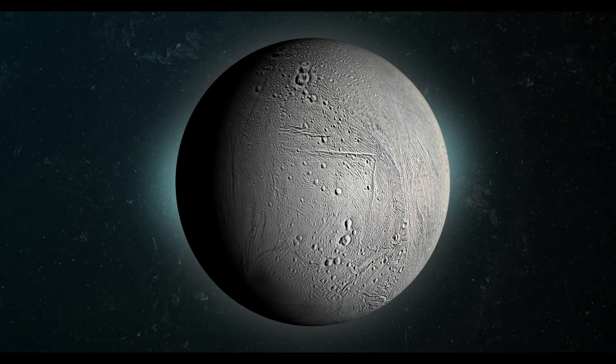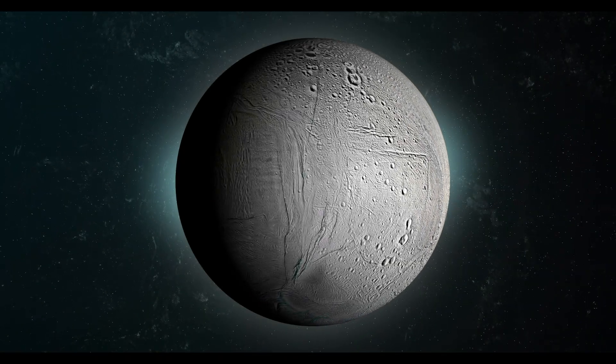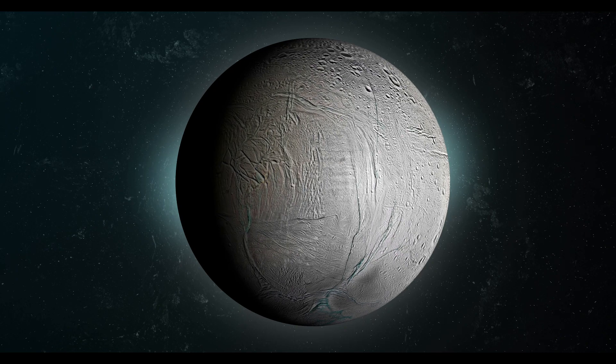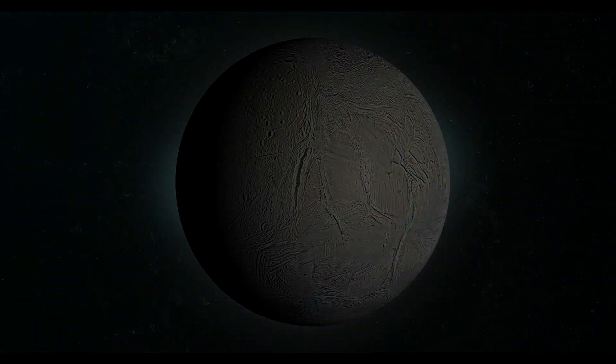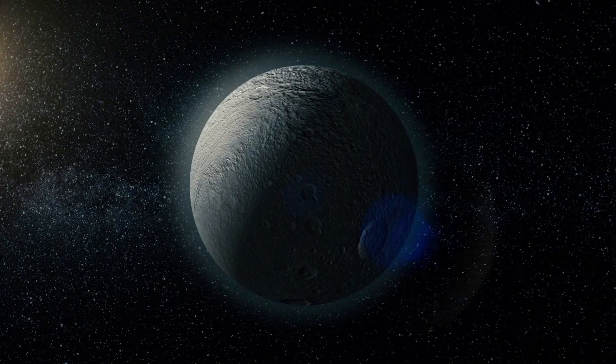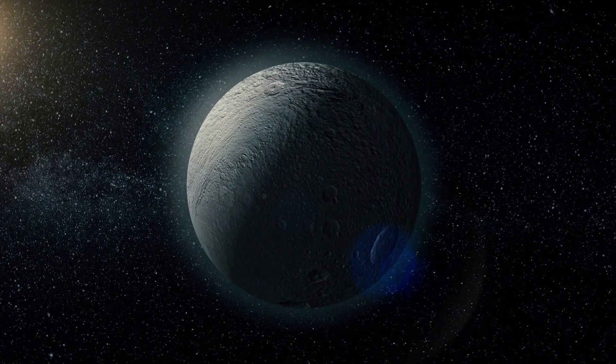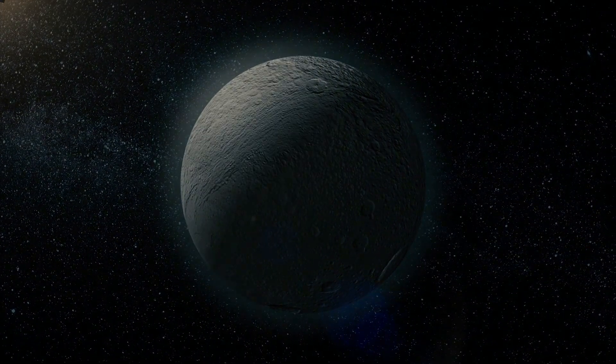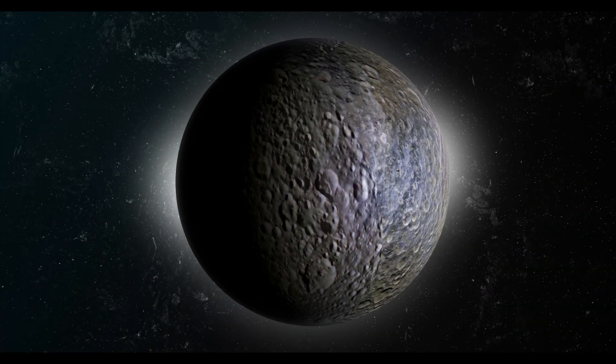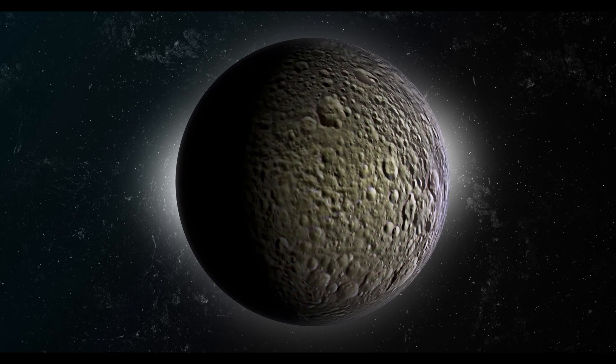Other main moons of Saturn include Enceladus, the moon that sprays its underground ocean into the sky with the potential ingredients for life; Rhea, Saturn's second largest moon with one face permanently facing Saturn; and Mimas, the smallest and innermost of the major moons.